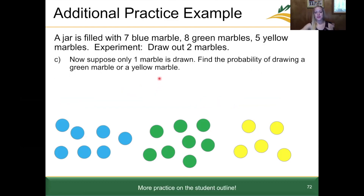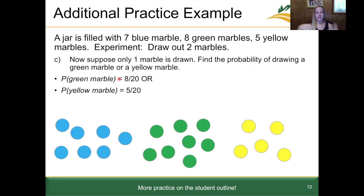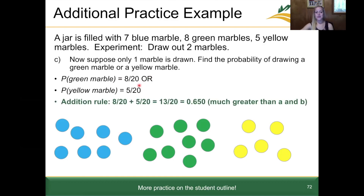Part C: suppose only one marble is drawn. Find the probability of drawing a green marble or a yellow marble. The word 'or' signals the addition rule. P(green) = 8/20 and P(yellow) = 5/20. These events are mutually exclusive — you can't draw a marble that is both green and yellow at the same time. So we use the simplified addition rule: P(green or yellow) = 8/20 + 5/20 = 13/20 = 0.650.